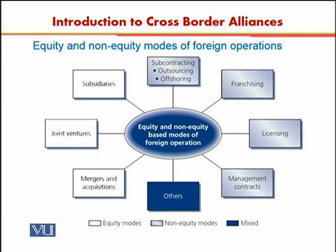There could also be management contracts, in which an organization provides management facilities to a firm in a different country. For example, this is very common in the hotel industry. Pearl Continental is a chain of hotels in Pakistan under the umbrella of Intercontinental Hotels — the management is provided by Intercontinental Hotels, but the legal entity of Pearl Continental Hotel is restricted to Pakistan. So these are the different types of equity and non-equity modes of cross-border alliances.